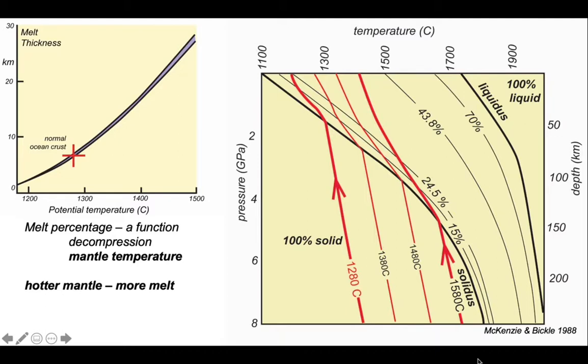What about our 1580 mantle? This will plot on the graph somewhere right up here with a melt thickness of 30 kilometers or more. This might be more representative of abnormal oceanic crust, such as is found under Iceland. So hotter mantle, with a higher potential temperature, will generate more melt and consequently thicker oceanic crust.